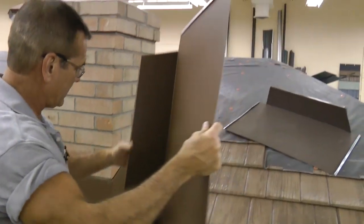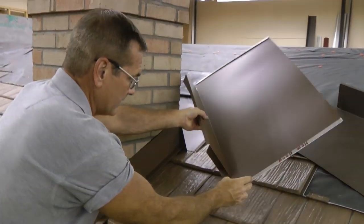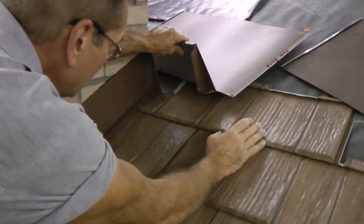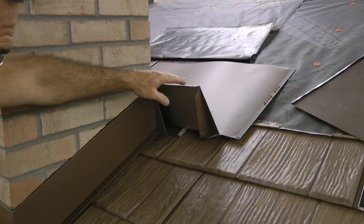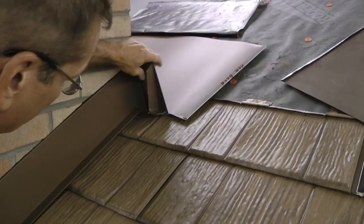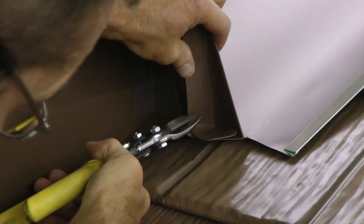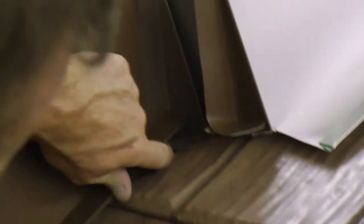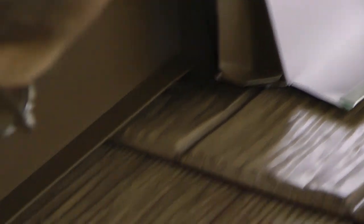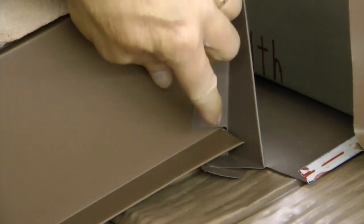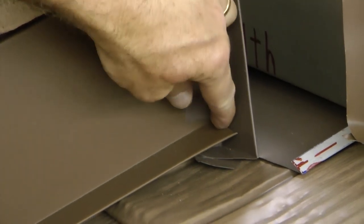So here we go. Now the only thing that's going to be left at this point to do is to set this in place. And then I'm going to need to cut a slot right here in this tab in order for it to go on either side of this ledge in the side wall flashing. Then slide it down into place and seal right around here.